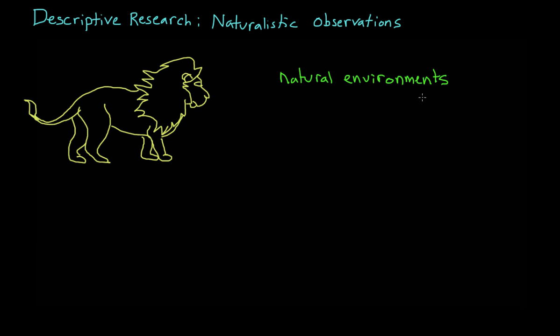By natural environment, we mean things like studying lions in their natural habitat, or how Jane Goodall went and lived with chimps to study their behavior. But naturalistic environments include more than just the jungle. When we talk about natural environments, what we mean are environments that have not been created or manipulated by an experimenter. So they really are natural.